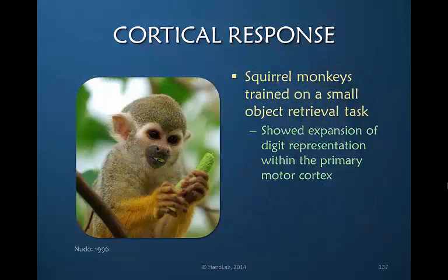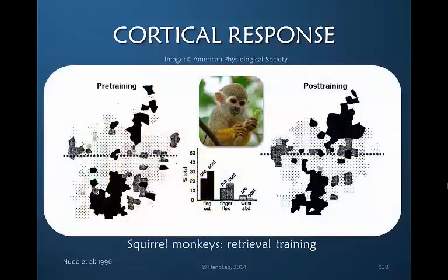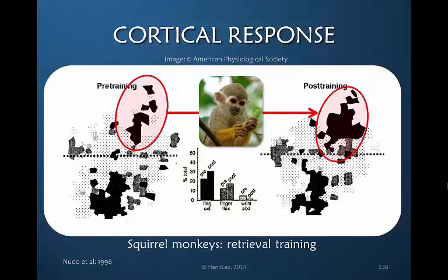In 1966, Nudo studied squirrel monkeys, training them on a small retrieval task — picking up small objects with their fingers. The repeated activity of retrieval showed a significant expansion of the representation of their fingers within their primary motor cortex. Here, if we look at pre-training of a portion of finger extension, we can see that post-training the area has significantly enlarged, proving absolutely that use determines cortical representation.